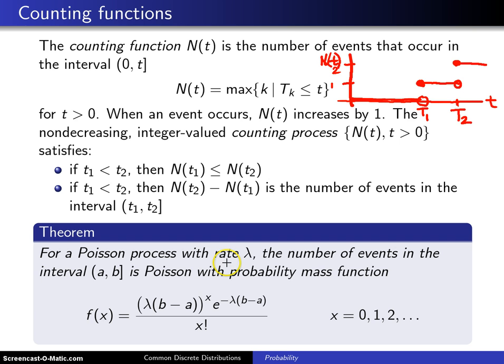For a Poisson process with rate lambda, the number of events in the interval (a,b] is a Poisson random variable with probability mass function f(x) is equal to that.